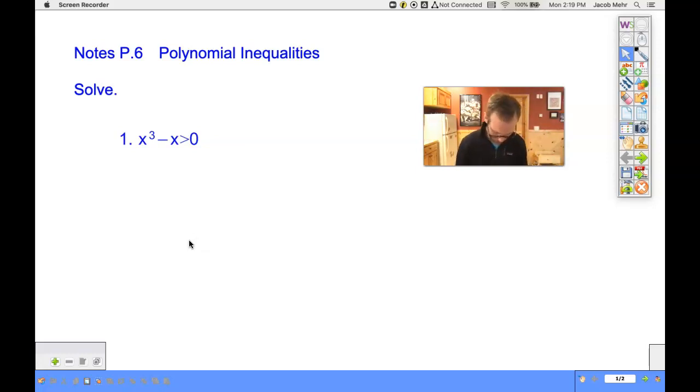So let's start with this polynomial first. x cubed minus x is greater than zero. Let's first find where does this equal zero.